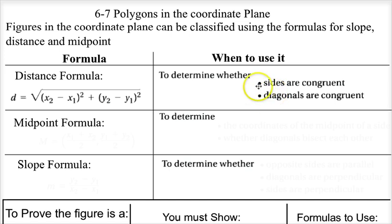For example, sides are congruent if I'm showing something is a rhombus, because a rhombus has four congruent sides, or showing something is a square. Or if diagonals are congruent — a rectangle has congruent diagonals — so it depends on what I'm trying to prove.